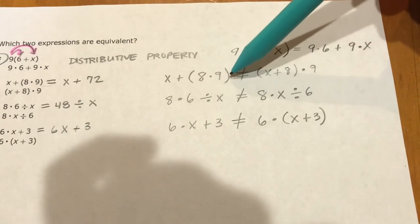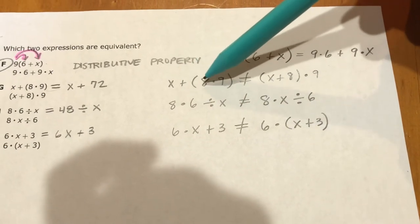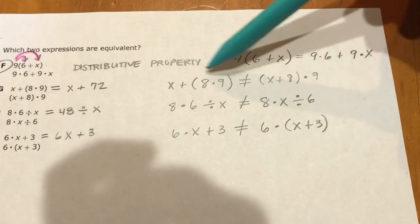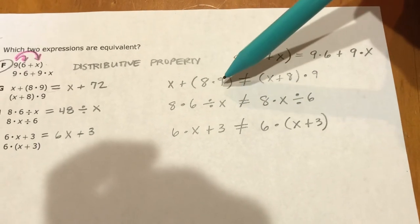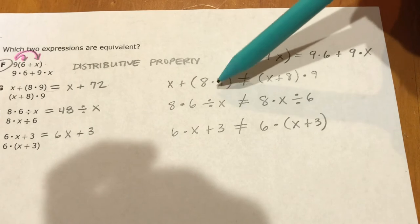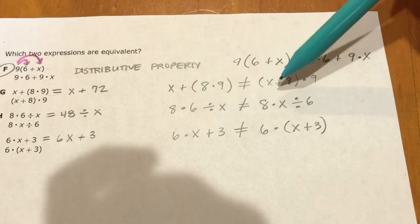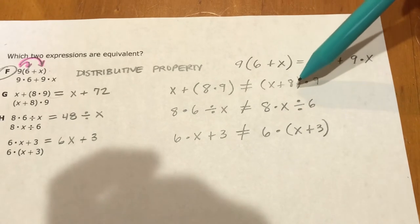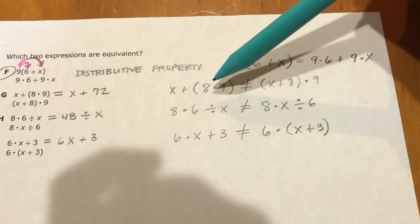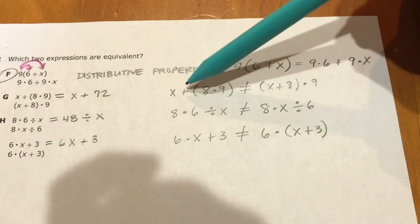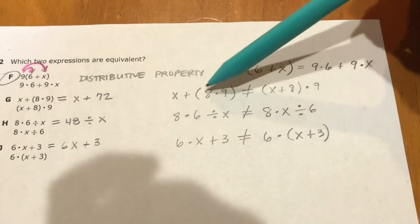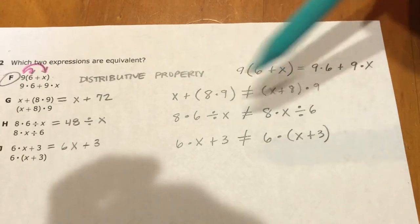What they did here was they moved the parentheses over, and that changes the order of operations. So parentheses say you have to multiply, you got to do what's inside of here first. 8 times 9 is different than x plus 8, so you're going to get different answers. You can't just shift the parentheses over if you have two different symbols. If it was all addition, you could, but you can't do that here.